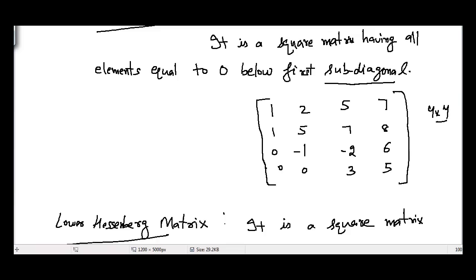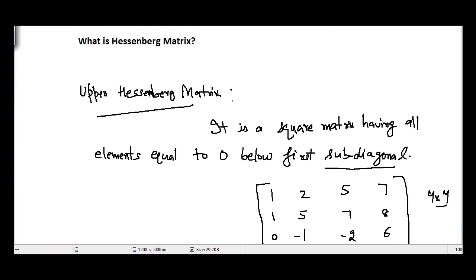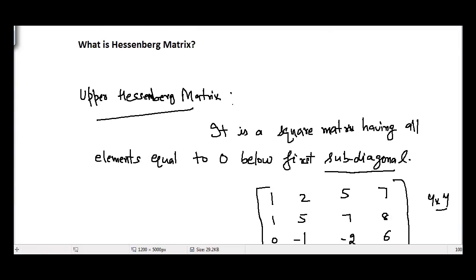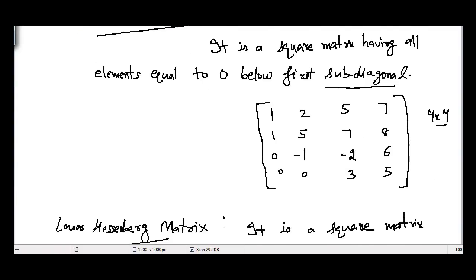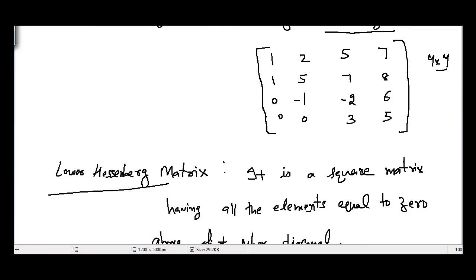So a Hessenberg matrix has to be either an upper Hessenberg or a lower Hessenberg matrix. I hope through this video you learned about what is a Hessenberg matrix. Try to write a few examples on your own, and I'll see you guys in the next video.